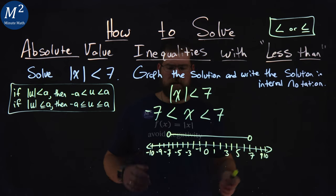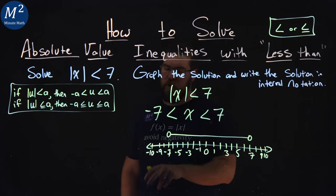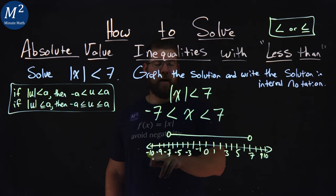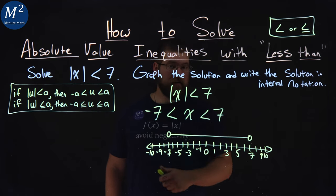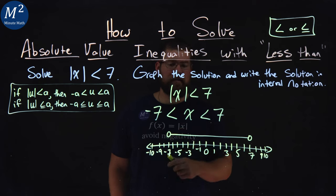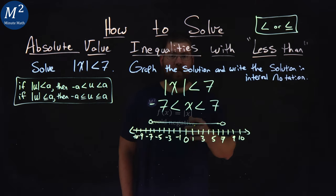And of course, we toss in a large number, or a large negative number. Negative 10 here, outside of our range. Negative 10 in the absolute value is a positive 10, which is not less than 7, which isn't true.